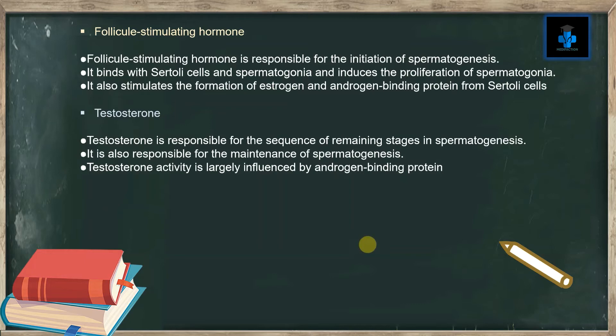Follicle stimulating hormone is responsible for the initiation of spermatogenesis. It binds with Sertoli cells and spermatogonia and it induces the proliferation of spermatogonia. It also stimulates the formation of estrogen and androgen binding protein from Sertoli cells.